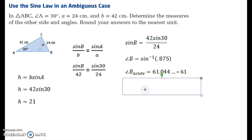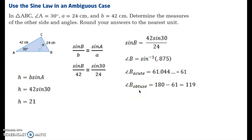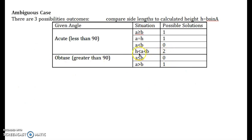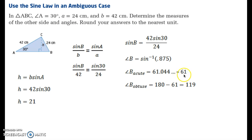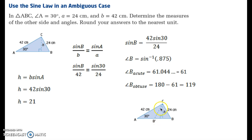We're going to have a second scenario in which an obtuse triangle can also be created. When we determined that the height was 21, we should have noticed that A is 24 centimeters — so A is greater than H but less than B. That takes us back to our two-solution scenario. H was 21, A was 24, and B was 42. So we need to not only calculate the triangle with an acute angle measure, we also need to consider the obtuse angle measure. If we fill in this dotted line, notice that the angle created at B is in fact obtuse.